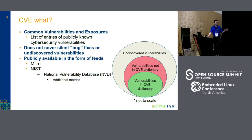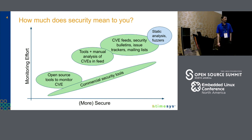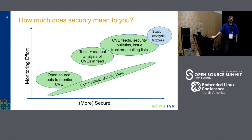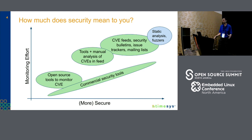So now that you know the different types of vulnerabilities, how do you go about monitoring them? If you just take CVE data, there are open source tools which can be used to monitor CVEs in a product. However, there are a lot of missed CVEs because of various issues with the quality of the CVE data, which we're going to discuss in the upcoming slides. The effort involved in monitoring using open source tools is quite minimal, but because of the missed CVEs, your product might not be secure.